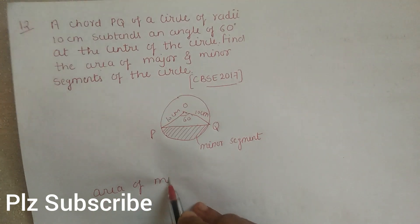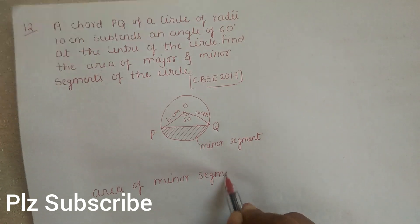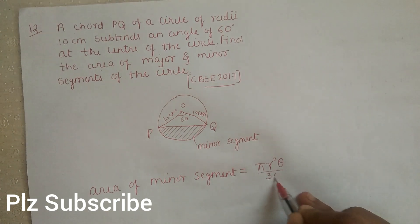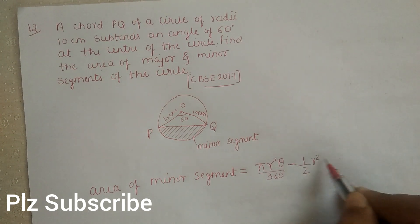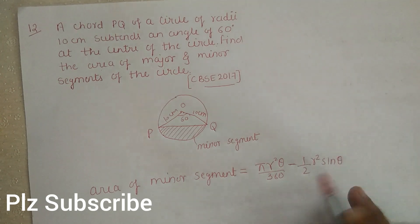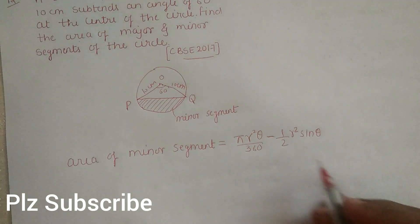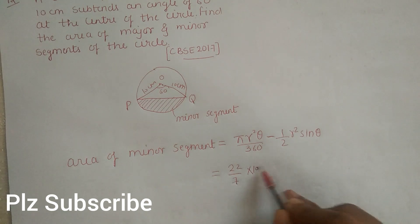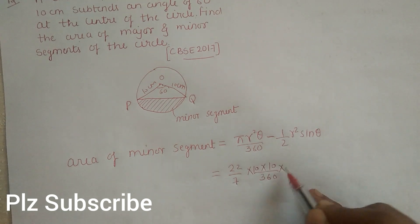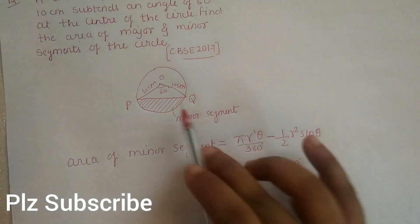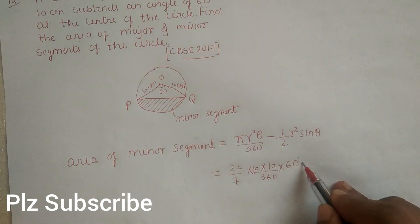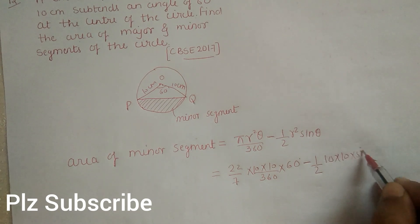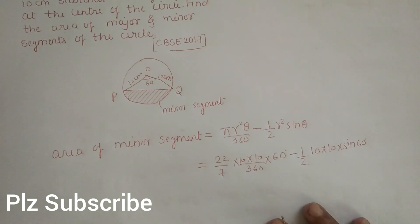We will apply the formula for area of the minor segment. Area of minor segment = π r² × (θ/360) − (1/2) r² sin θ. Here π = 22/7, r = 10 centimeters, and θ = 60 degrees. So we substitute: (22/7) × 10 × 10 × (60/360) minus (1/2) × 10 × 10 × sin 60°.